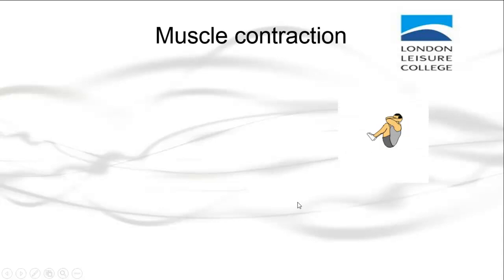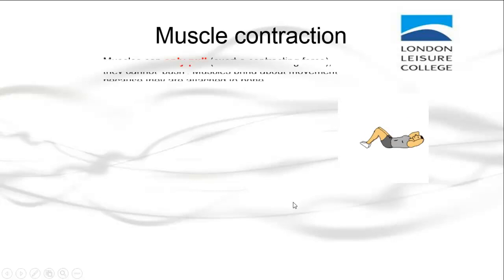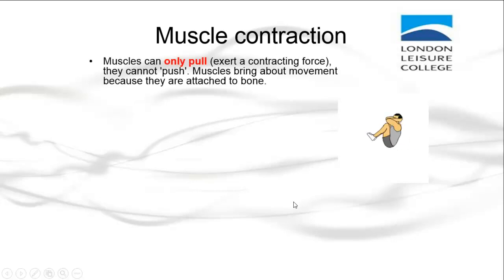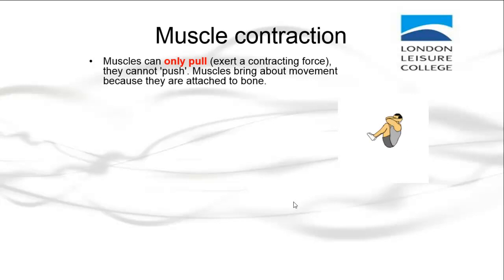Understanding of muscle contraction theory: muscles can only pull. When they get smaller it creates movement, and therefore that lifts a weight. They can never push. Muscles bring about movement because they are attached to bone.